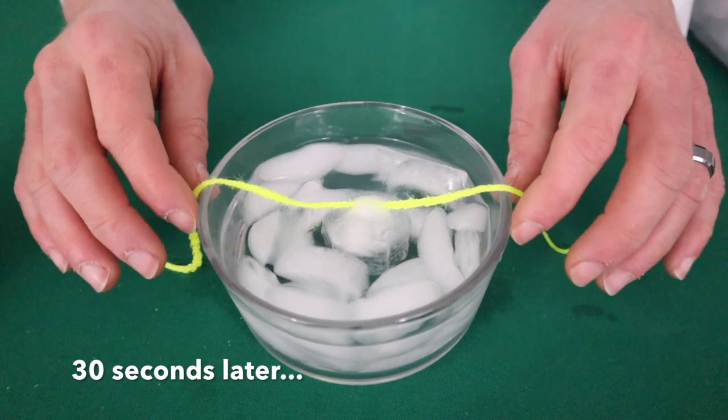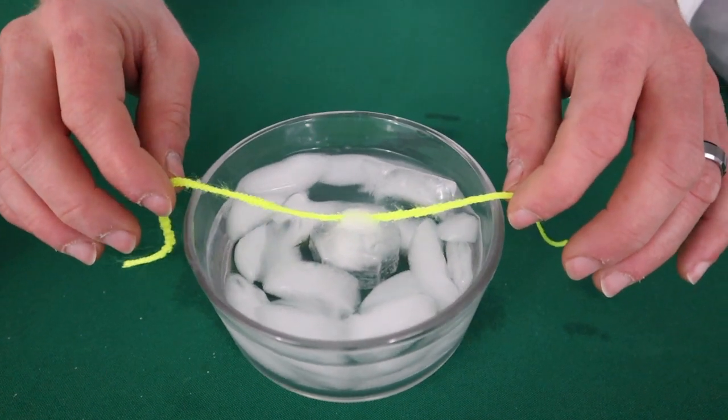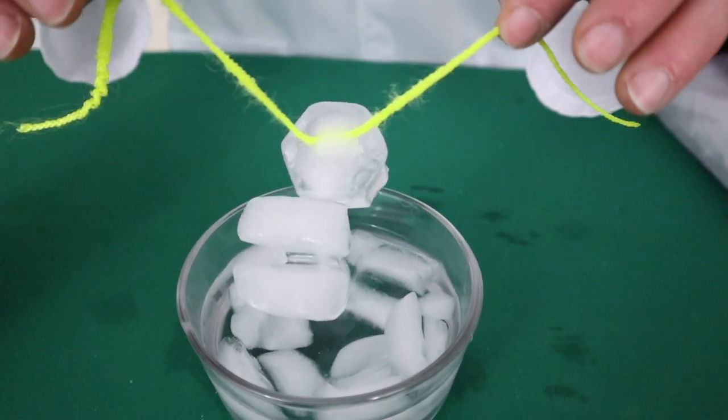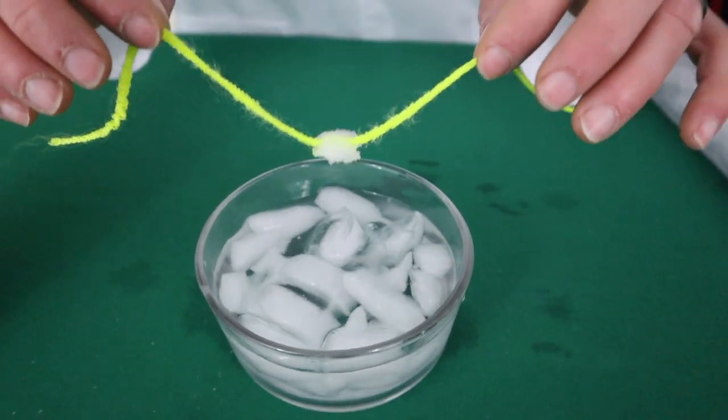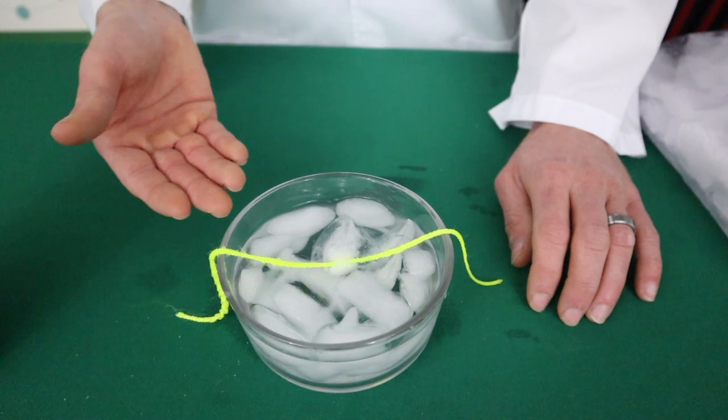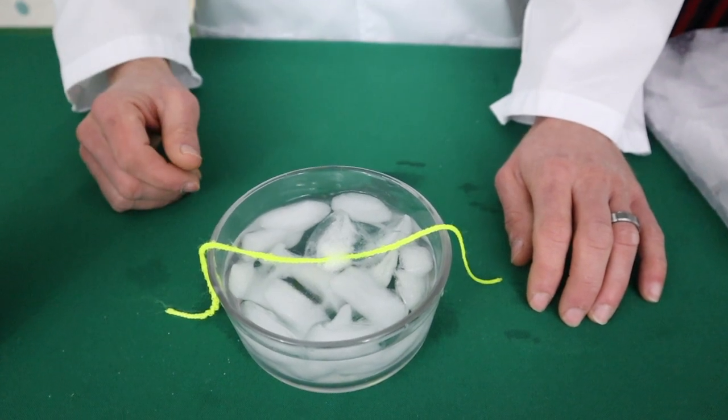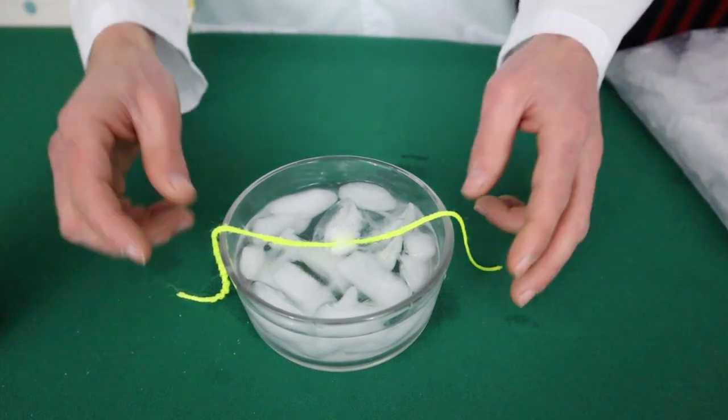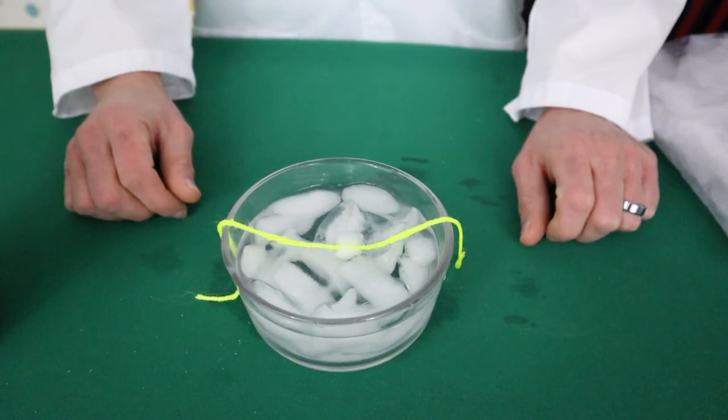All right, the moment we've all been waiting for. Wow, not only did we freeze the ice cube to the string, it picked up two other ice cubes. So it eventually broke off and fell but you can see we were able to freeze the string to the ice cube and successfully go fishing for ice. Super exciting.